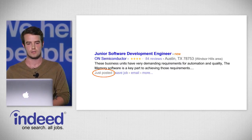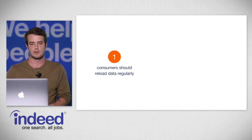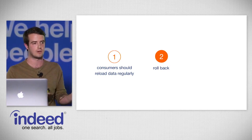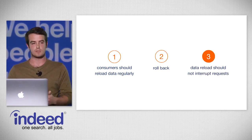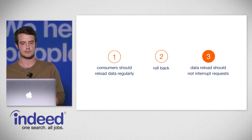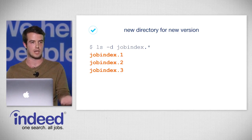Because we wanted to keep jobs fresh and updated throughout the day, consumers would need to reload data regularly. In case of a problem, we wanted to roll back to a previous copy. And since we want the site up and fast all the time, a data reload shouldn't interrupt job seeker requests. This led us to artifact versioning — for each new version, we create a new directory with the artifact name and an incrementing version number.